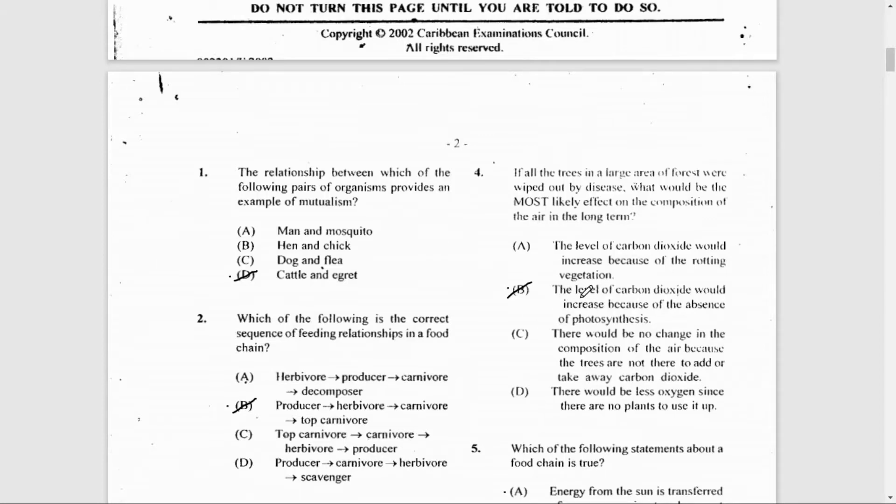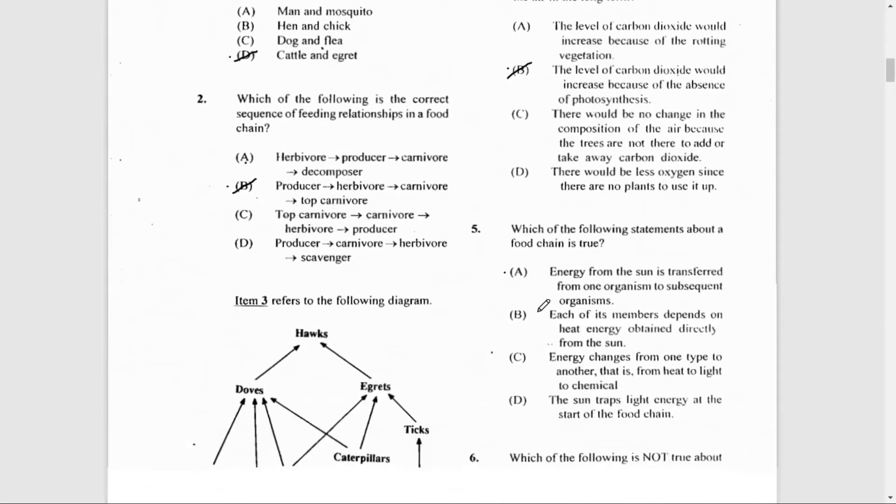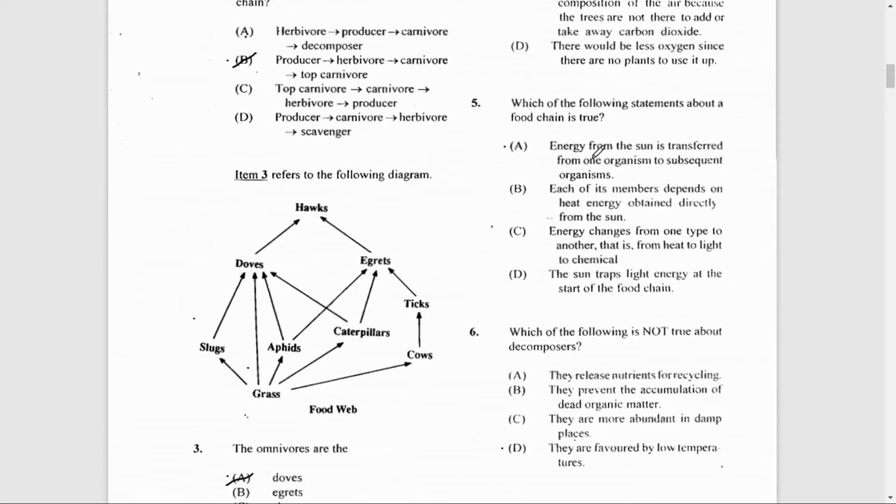Number 5: Which of the following statements about a food chain is true? The answer is A: energy from the Sun is transferred from one organism to subsequent organisms.